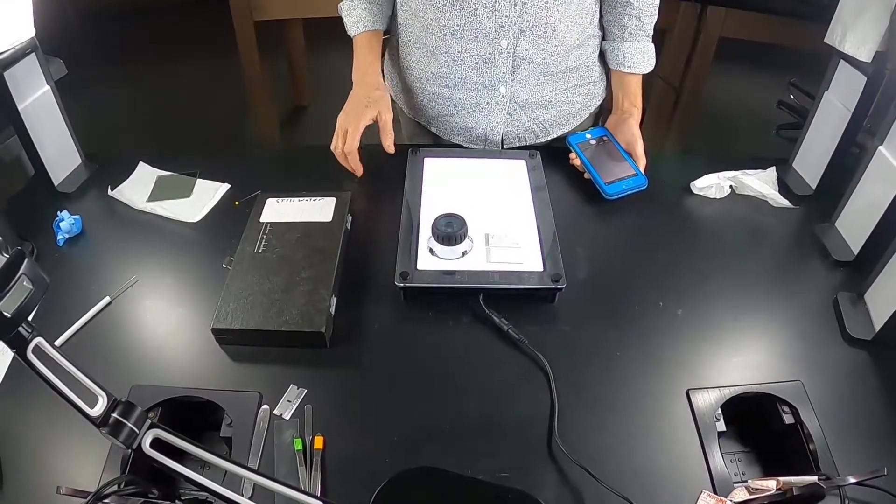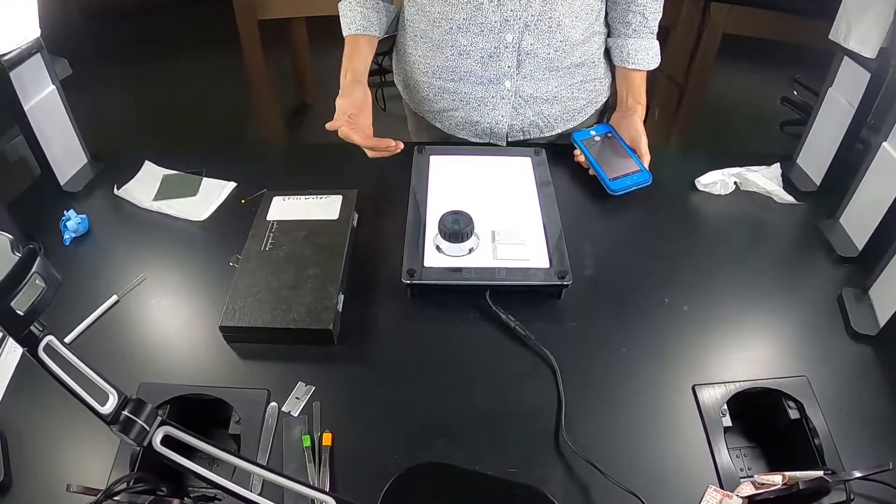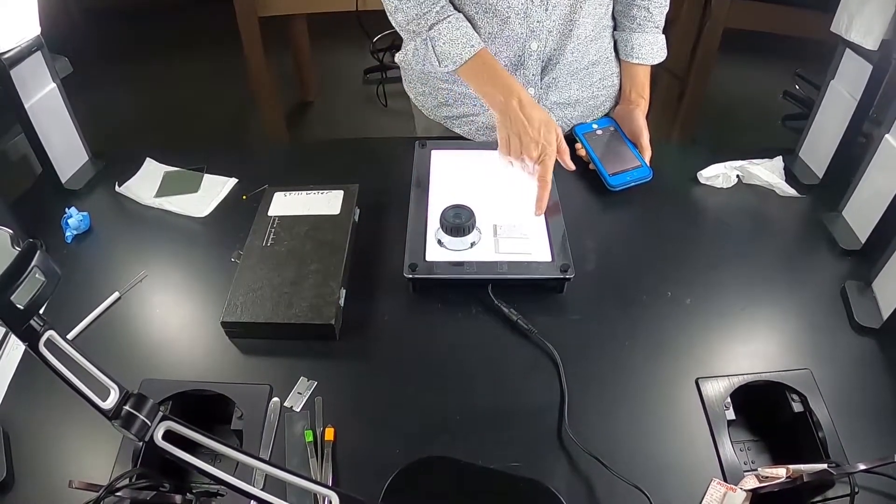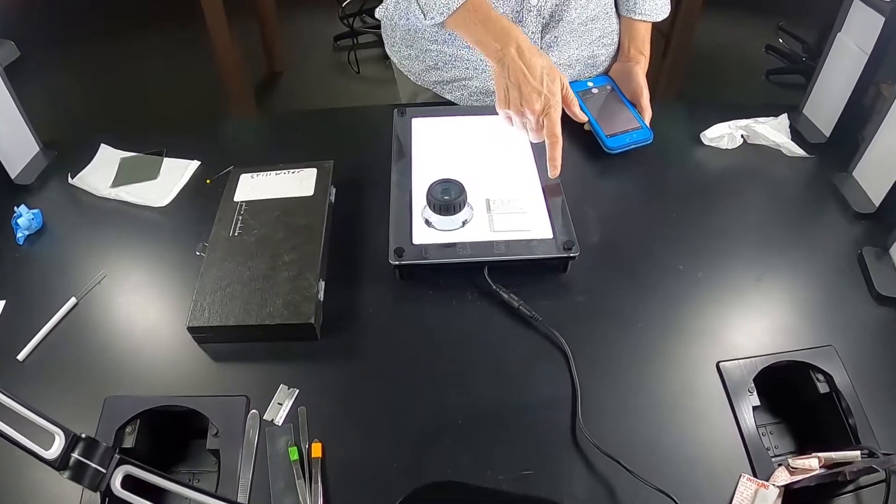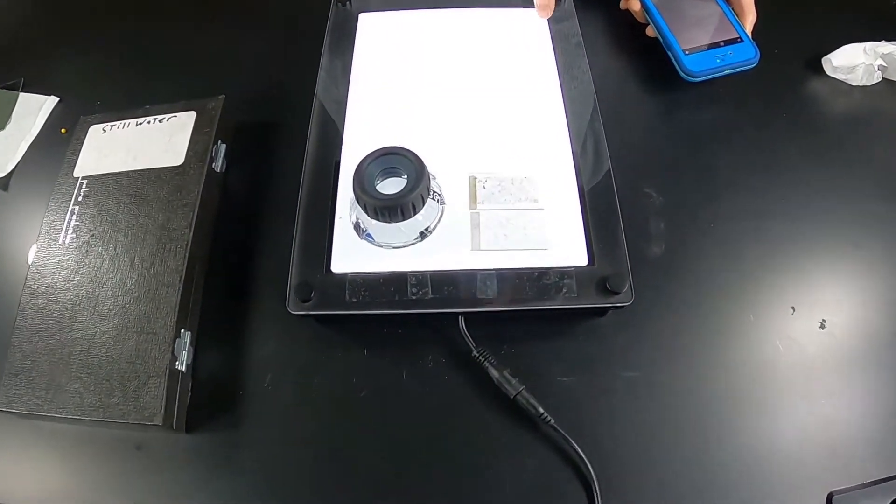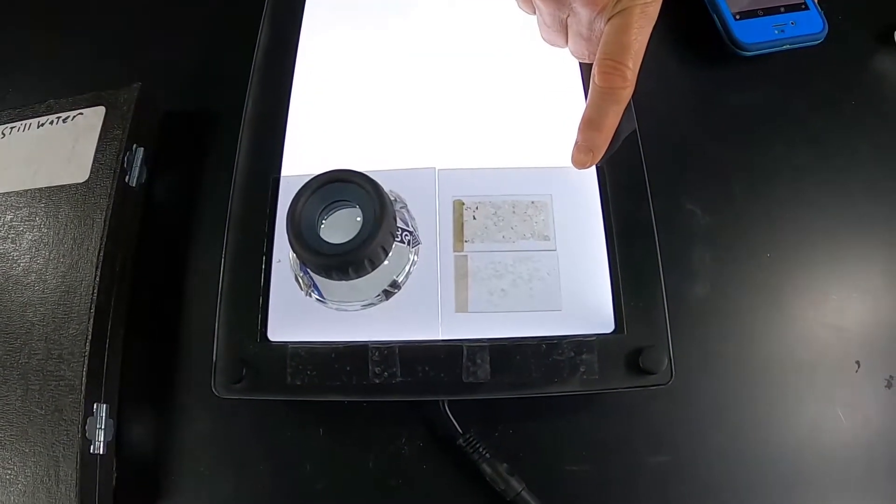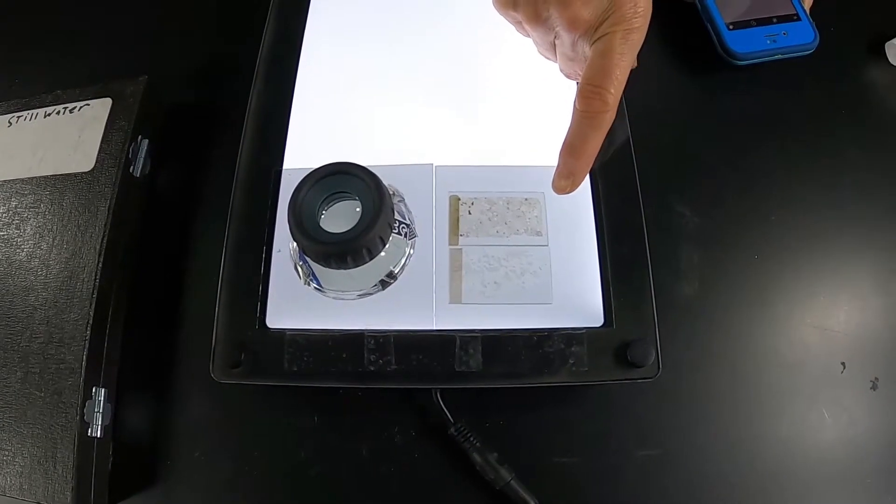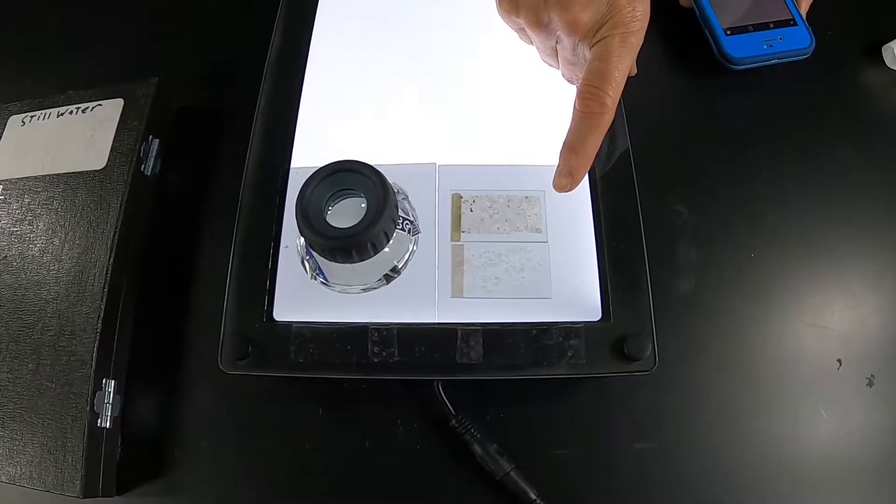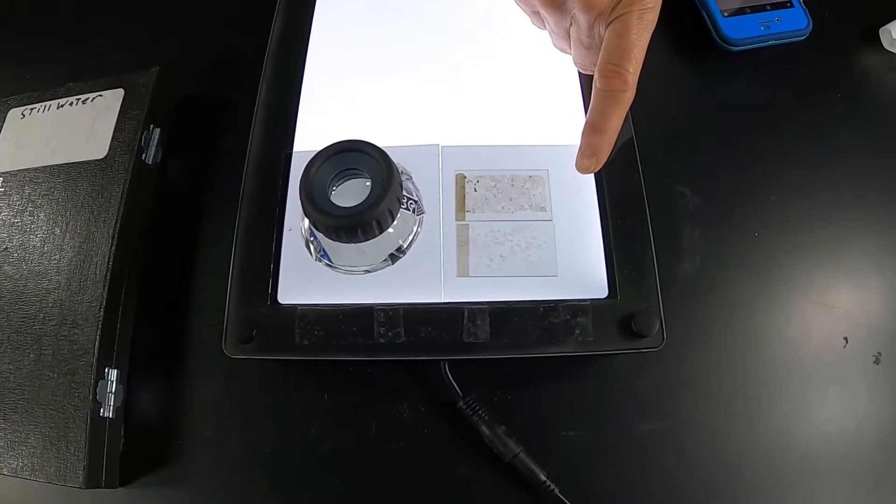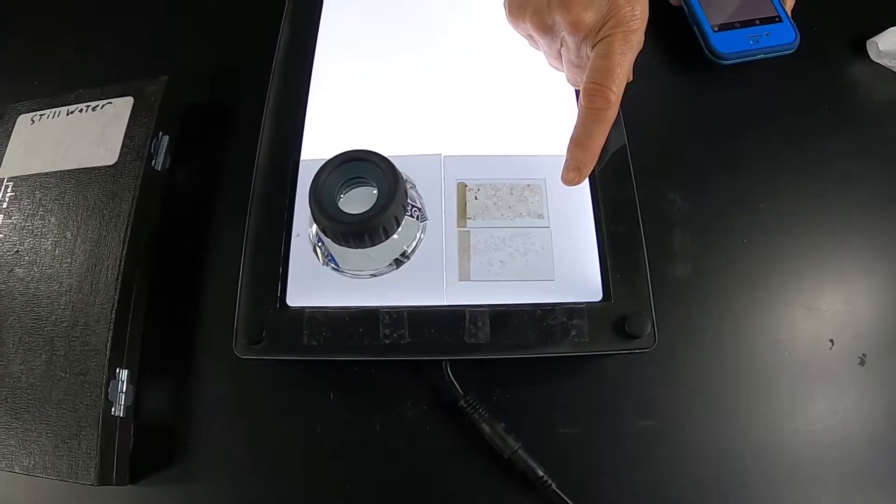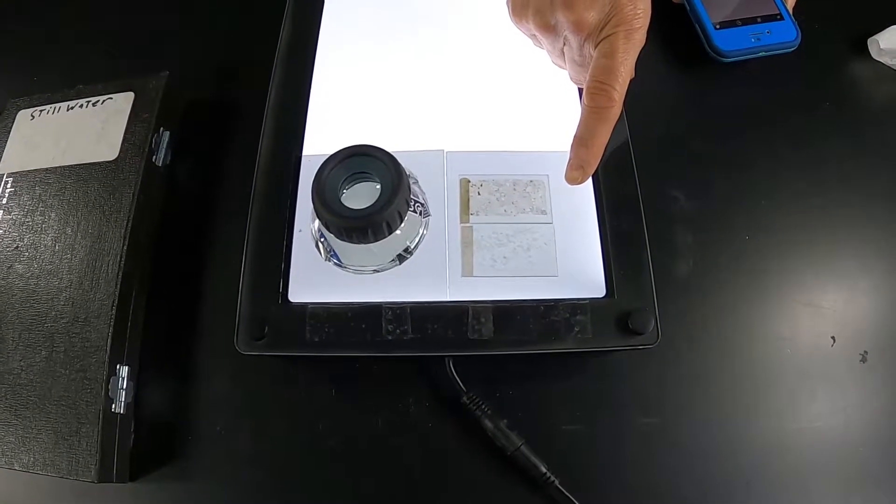So our plan now is to take a look at different kinds of pyroxenes in thin section. And I have here two different samples also from the Stillwater Complex. Note they're on the LED panel and we have one polarizer. So this is a plain polarized view of these two samples. These are not the samples that you have in your lab, but similar to them.